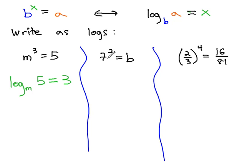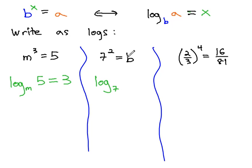For the second example, when we want to write it as a log — switching forms — we write log, so we know we're in the opposite form. The 7 is the base of the problem, so it's our little subscript. The answer goes inside the logarithm, and the log will always equal the exponent here of 2.